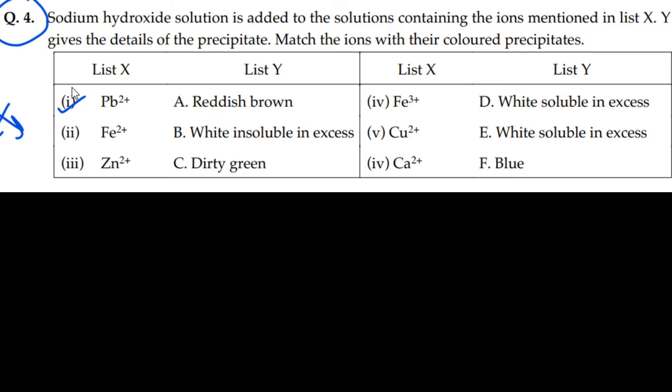First look, Pb²⁺ - we discussed this again. Pb²⁺ gives white soluble in excess, so the right answer is D. I will write it in the same way to avoid confusion. D will match white soluble in excess.